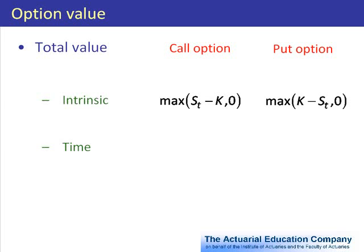We can calculate the intrinsic value directly, but that's not the case with time value. Time value is just a balancing item, so for the call option it's the full value of the option c_t minus the intrinsic value shown above. And for a put option it will just be the value of the put option p_t minus its intrinsic value.